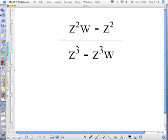Z squared W minus Z squared over Z cubed minus Z cubed W. First off, are those the same thing? No, because the Z's are not the same. You've got a squared and a cubed. What were the three words? Factor, Restrict, Cancel. So we need to start with factoring.